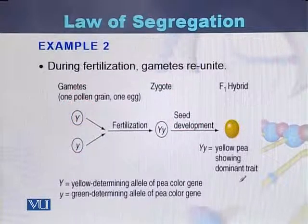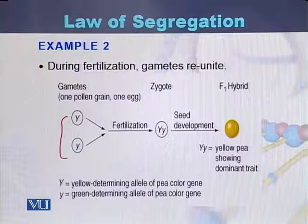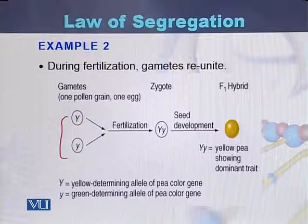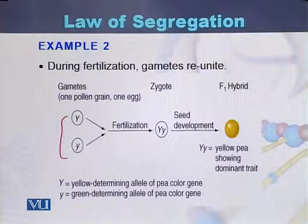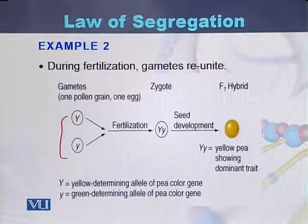During fertilization, both gametes will join with each other, and as a result the F1 plants produced will have yellow color. At the end, the gametes unite with each other.